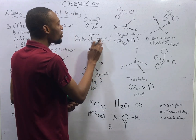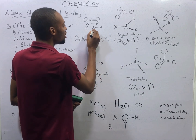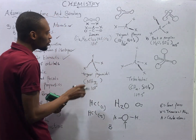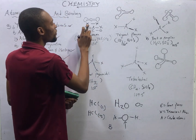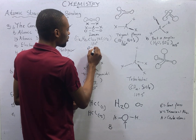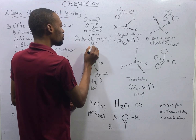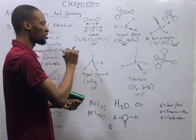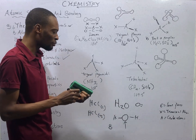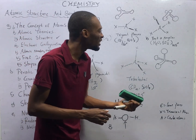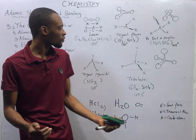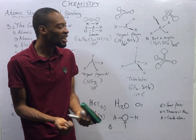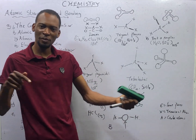CO2 can be represented in the form S-A-S, with carbon as the central atom and oxygens around it. O2 can be in the form S-S, which is O and O. H2 can also be in the form S-S. Linear means straight line, and the bond angle in linear molecules is 180 degrees. This is easy to understand because the sum of angles on a straight line is 180 degrees.